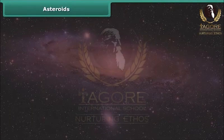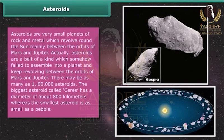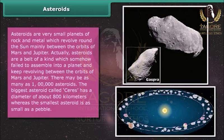Asteroids are very small planets of rock and metal which revolve around the Sun, mainly between the orbits of Mars and Jupiter. Asteroids are a belt of objects which somehow failed to assemble into a planet. There may be as many as one lakh asteroids. The biggest asteroid, called Ceres, has a diameter of about 800 kilometers, whereas the smallest asteroid is as small as a pebble.